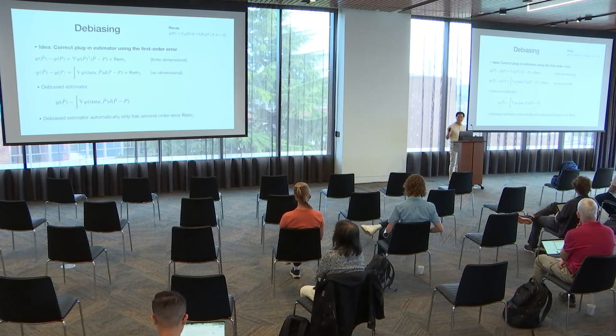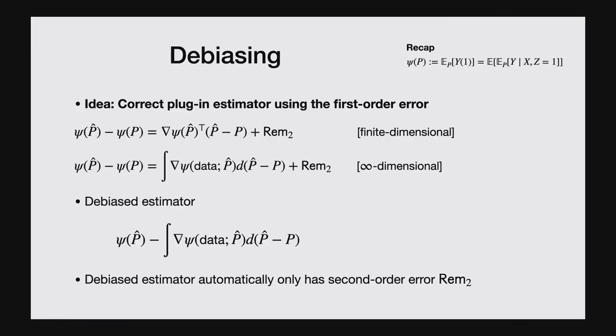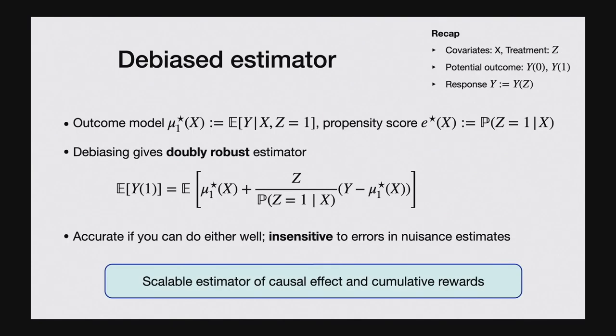I take a first-order Taylor expansion of my statistical estimator and use it to correct my plug-in approach, so by definition I only have second-order terms in the Taylor expansion. If I apply this to the particular statistical functional — the mean of Y1 — then I get what's known as a doubly robust estimator, which is actually one of the most scalable estimators for the causal effect. In addition to the regression function I fitted, I now also have the residuals of that regression function, which I reweight by the propensity score.